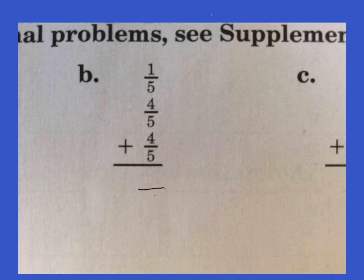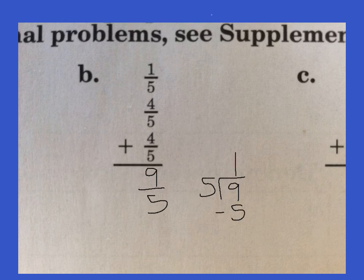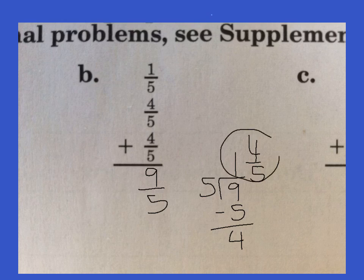B — our denominator is going to be 5. We add 1 plus 4 would be 5, plus 4 more would be 9. Our answer is 9 fifths, which is an improper fraction, so we've got to divide 9 by 5. Five goes into 9 one time. Five times 1 is 5. Subtract and we get 4. So our answer is 1 and 4 over 5 — that can't be reduced, so we get 1 and 4 fifths.